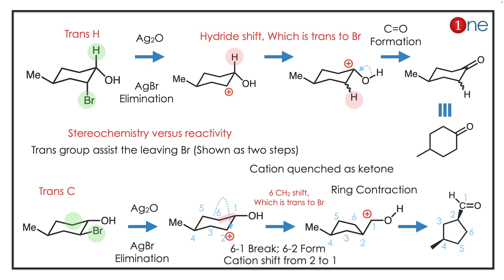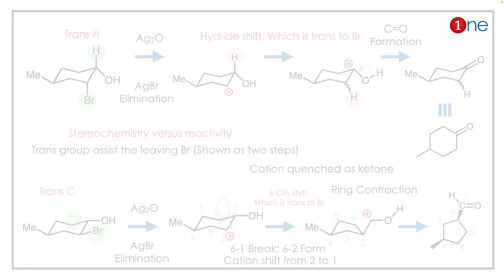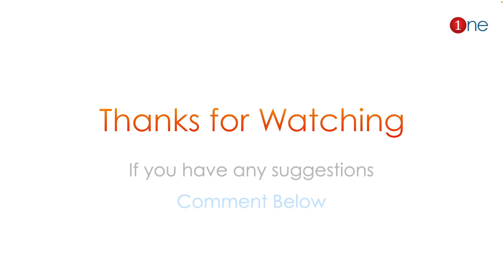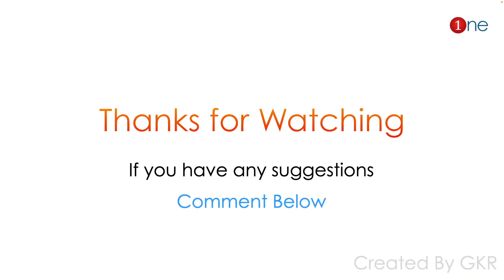The concept outlined here is that stereochemistry can influence product formation. In one case it becomes a six-membered ring, and in the other case it becomes a five-membered ring. That's all from this video — thanks for watching. If you have any suggestions, comment below.